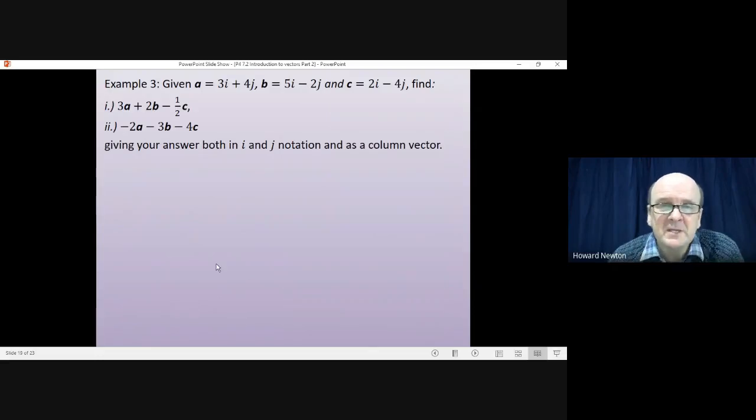Okay, I'll let you have a go at getting used to that. So example 3, we're given three vectors in i and j notation. A is 3i plus 4j. B is 5i minus 2j. And C is 2i minus 4j. And you're asked to work out these two things. Doing a combination of multiplying and adding and subtracting. And give your answers both in i and j notation and also as a column vector. Just to get used to using both forms of notation. Okay, pause the video. Have a go at this. And then come back to me when you're ready.